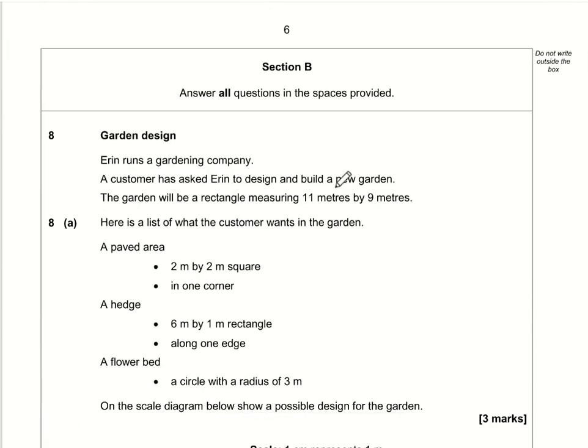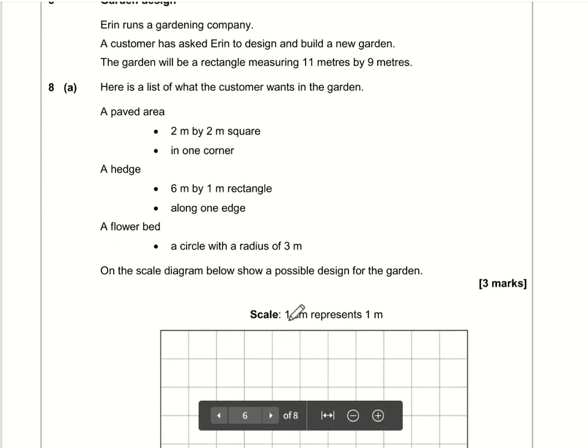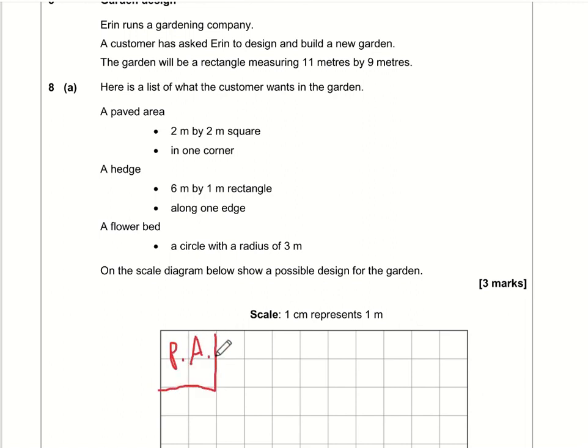For question number 8, luckily the scale is 1 centimeter to 1 meter. We want a paved area 2 by 2 in a corner, so I'll stick it up here: 1, 2, 1, 2, there we go, that is the paved area. The hedge is 6 meters by 1 meter, so 1 by 1, 2, 3, 4, 5, 6 - that is our hedge.